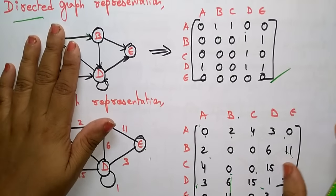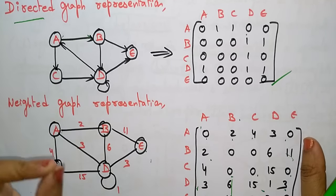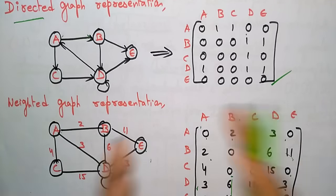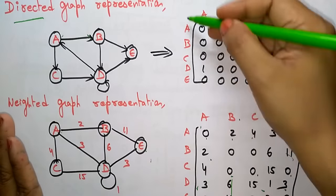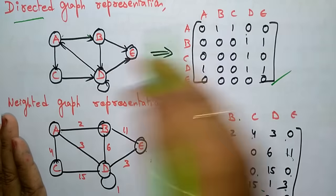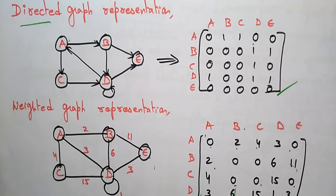Whatever graph is given - whether it is a directed graph, undirected graph, or weighted graph - first write the vertices arranged in rows and columns, then calculate the adjacency matrix for each vertex. This is the first graph representation: the adjacency matrix. Thank you.